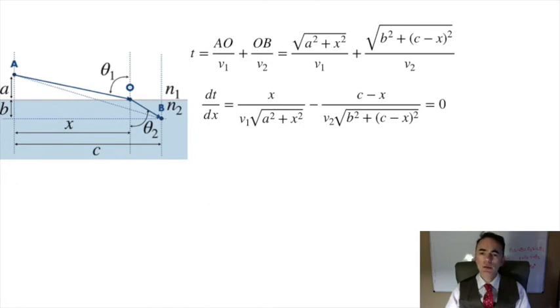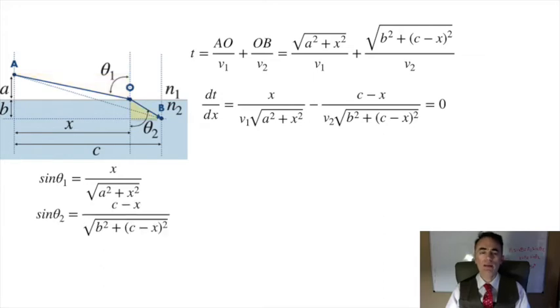Here I will use the definitions of the sine of theta1 and theta2. Sine of theta1 is x over the square root of a squared plus x squared, and sine of theta2 is (c minus x) over the square root of b squared plus (c minus x) squared.